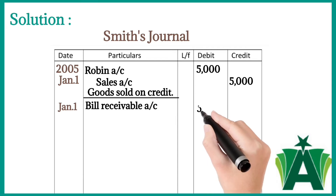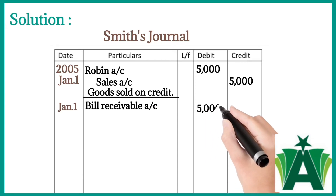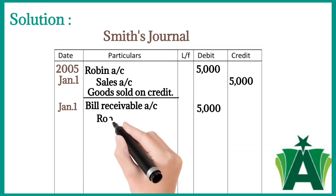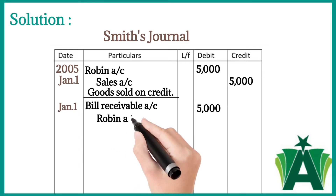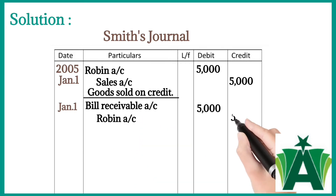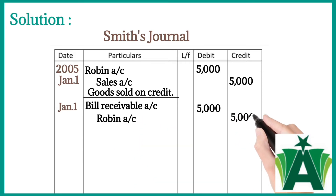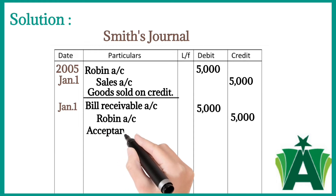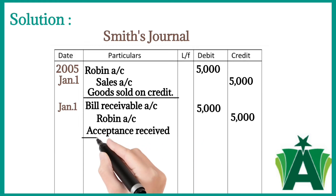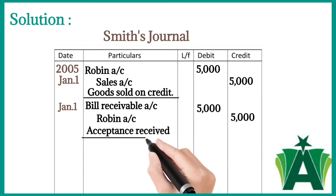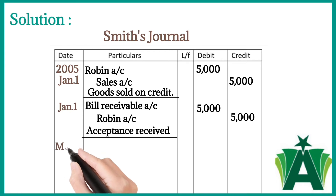Here two accounts are involved: Bill Receivable account is debited with five thousand dollars because of the increase in assets, and Robin account is credited with five thousand dollars because of the decrease in asset.